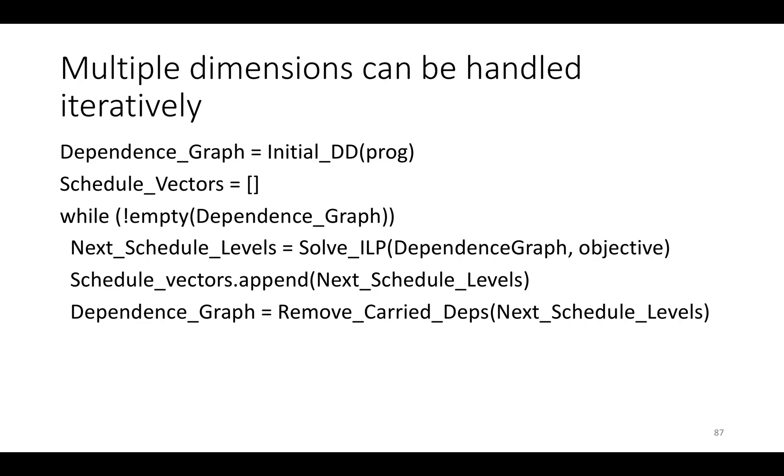That's a very broad outline of how polyhedral scheduling works. You use this sort of encoding method that relies on Farkas Lemma to turn the universally quantified constraints that represent things like data dependencies, locality, and parallelism into ILP constraints. Then you set up an objective function that represents something about the properties of the program that you want to optimize, and you run it basically over and over again, constructing levels of the loop from the outermost to the innermost.